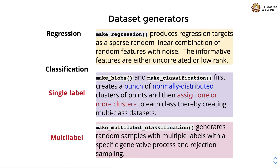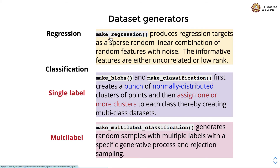Sometimes we do not want to use a standard training set, but instead want to make a synthetic dataset with certain statistical properties. sklearn dataset generators help us to generate this kind of dataset. The make_regression function produces regression targets as a sparse random linear combination of random features with noise, where informative features are either uncorrelated or low rank. We can use make_regression to generate a dataset with a single target or multiple targets. We will see this function in action in the subsequent CoLab.